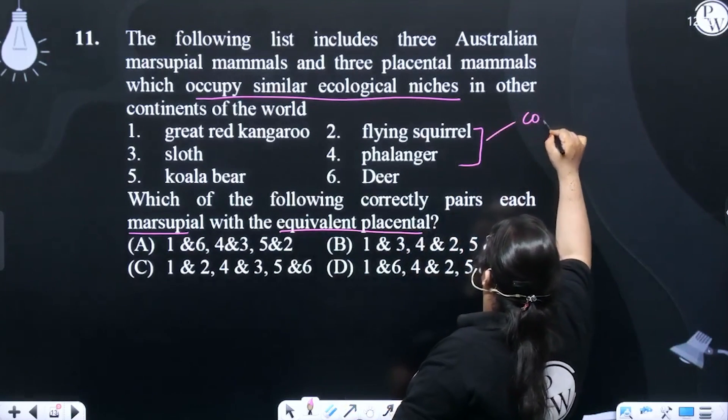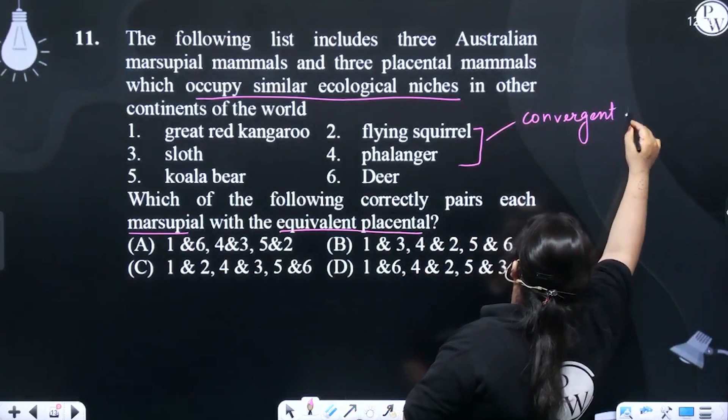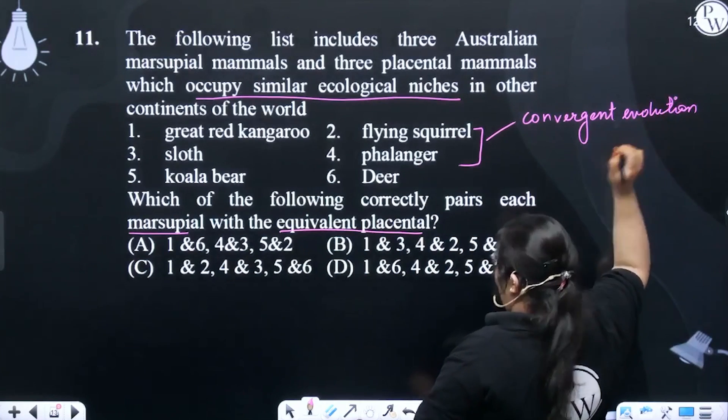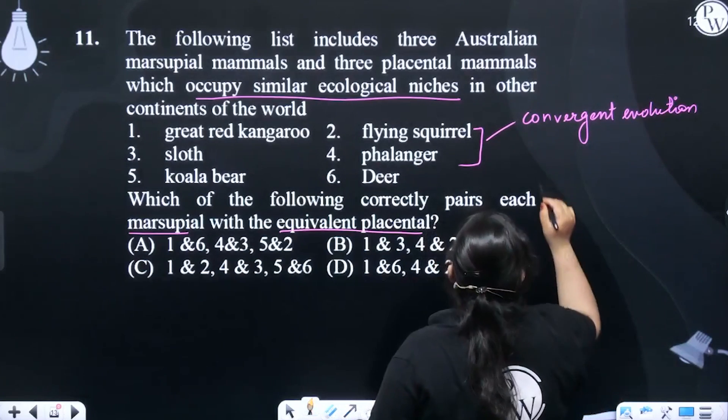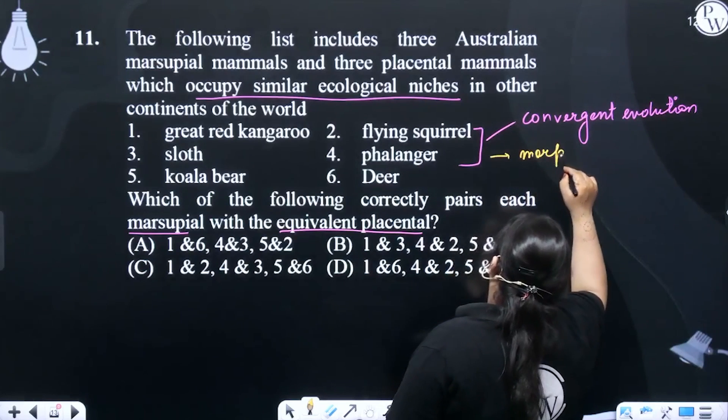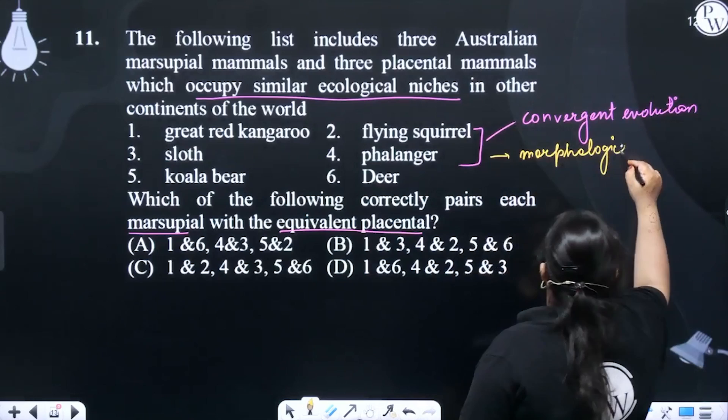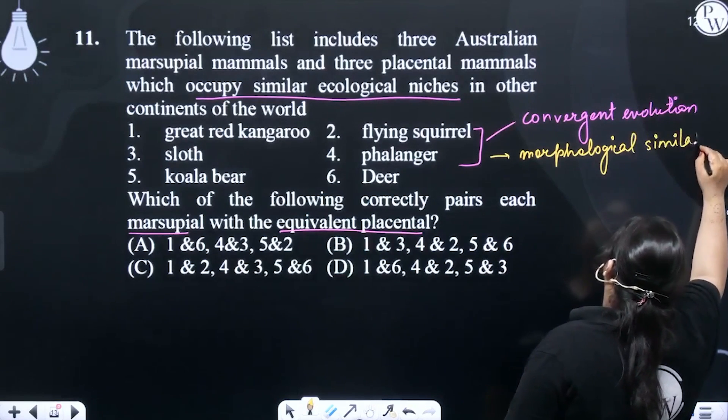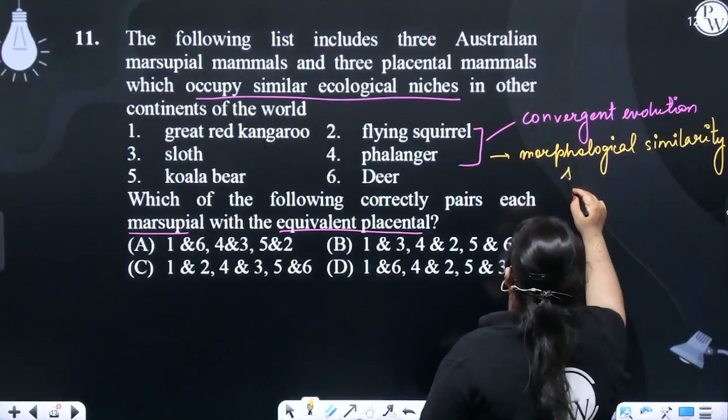They are an example of convergent evolution. They are showing convergent evolution that they develop morphological similarity because they have the same habitat.